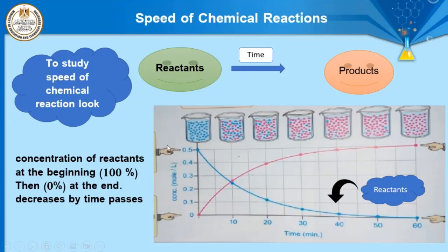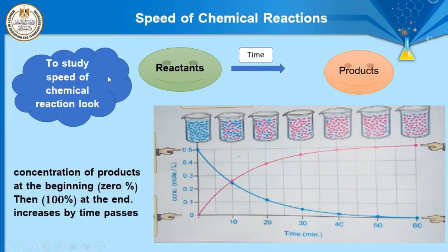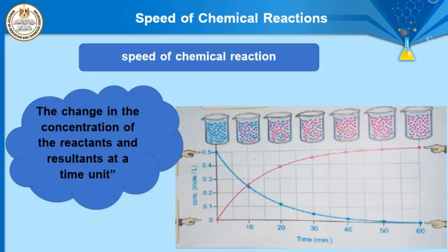The reactant can be represented by blue color on the graph. After a period of time, the concentration of reactant decreases until it reaches zero, because at the end of the chemical reaction there is no reactant, only product. The concentration of product starts at zero, represented by red color, then increases until it reaches its maximum value of 100% as time passes.